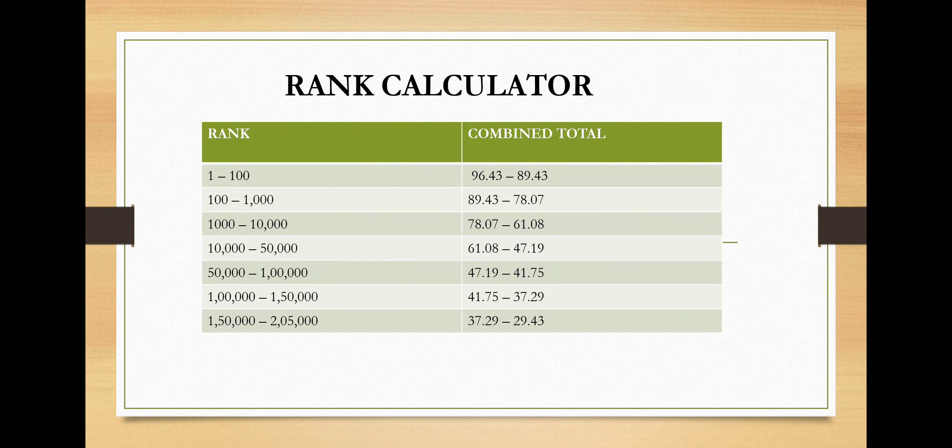His combined total should be between 96.43 to 89.43. At the same time, for rank 100 to 1,000, it's 89.43 to 78.07. The series is continuous like 1,000 to 10,000 with its combined total range, 10,000 to 50,000, 50,000 to 1 lakh, 1 lakh to 1 lakh 50,000, and 1 lakh 50,000 to 2 lakh 50,000.